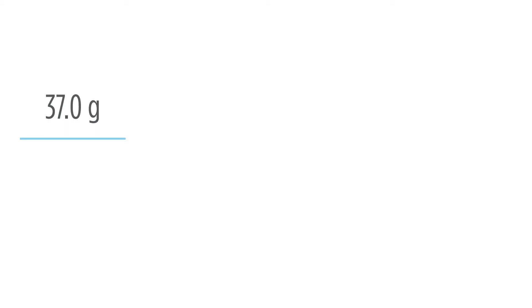We can then, to calculate the density, take 37.0 grams and divide it by 5.08 milliliters to give us 7.28 grams per milliliter.